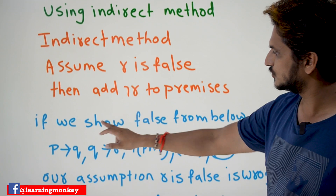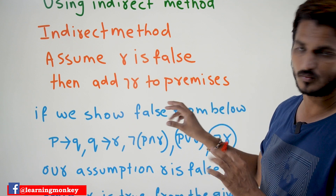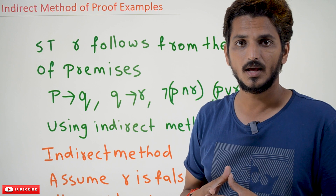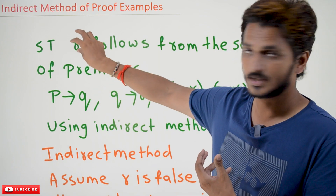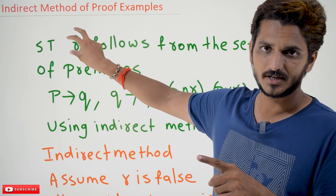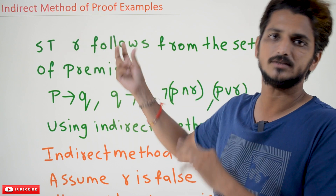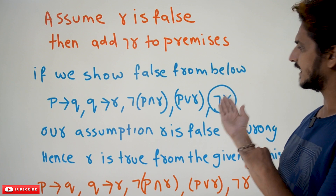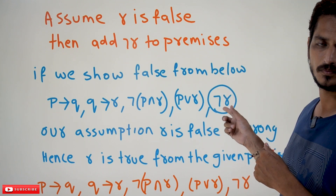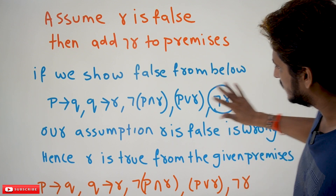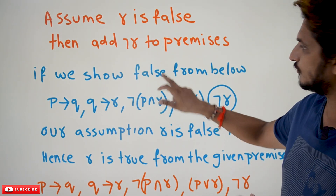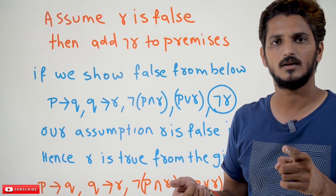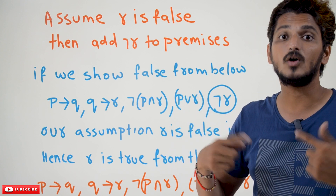Once you add negation R to the premises — not only negation R, if in place of R you are having a composite proposition, we assume that composite proposition is false and negate it. The negation of our composite proposition is added to our premises. That is what we need to do. So from these premises, if you show false, then our assumption that R is false is going to be wrong. So R is going to be true. This is what indirect method is.